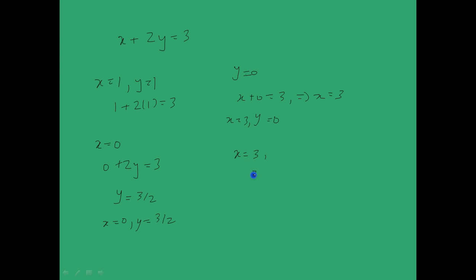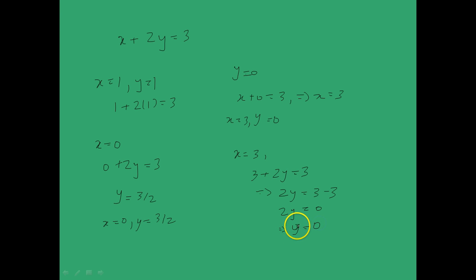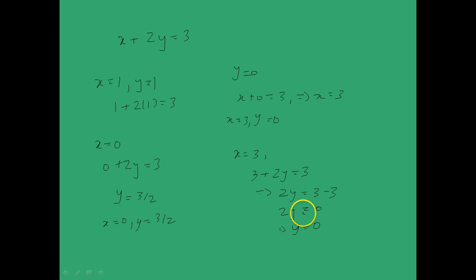If we put x equal to 3, we have 3 plus 2y is equal to 3, which implies 2y is equal to 0. Remember that we can divide both sides of an equation by a real number as long as it is non-zero. Dividing both sides by 2, we obtain y equal to 0. So another solution is x equal to 3 and y equal to 0.